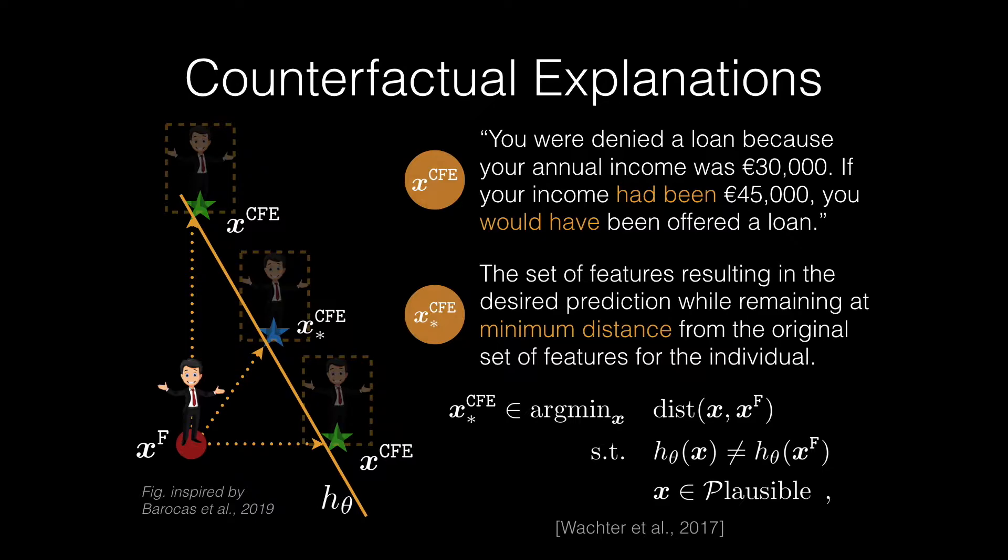The constraints are that we should first of all get the desired output or change it with respect to what it is now, which is an undesired prediction. We additionally have some constraints such as plausibility that may be individual specific or context specific.